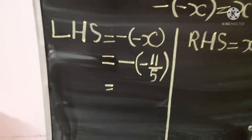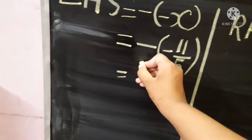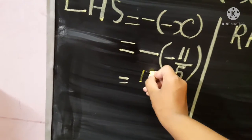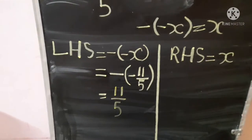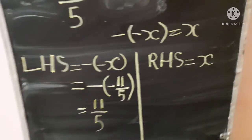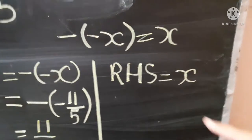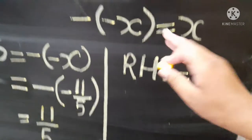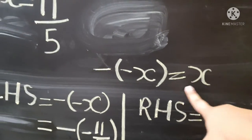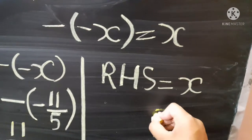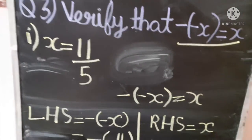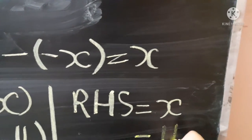So here, minus minus gives plus, and 11 upon 5 is already in plus — so our LHS equals positive 11 upon 5. Now for RHS: RHS is equal to x, because after the equals sign it is x only. And in the question x is given as 11 upon 5, so x equals 11 upon 5.